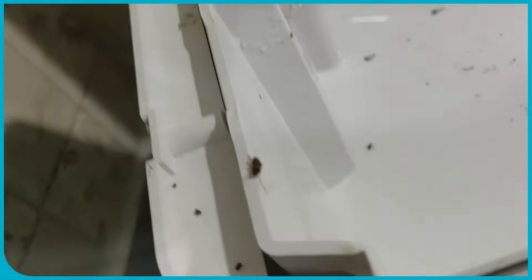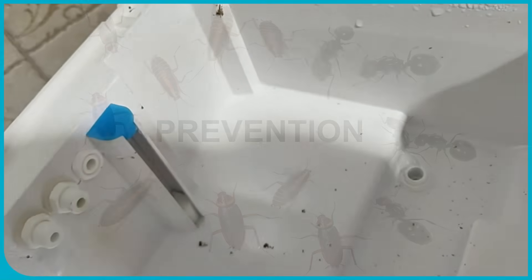Plumbing and drains: Pests like cockroaches can use plumbing systems and drains as highways to enter homes and potentially reach areas near water purifiers.